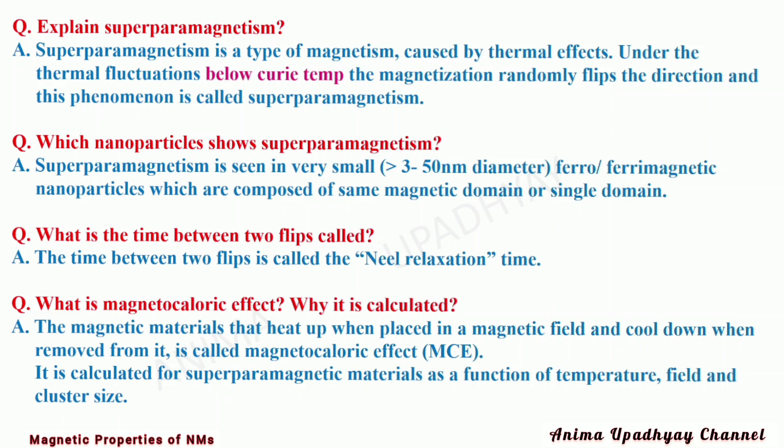What is the time between two flips called? The time between two flips is called the Néel relaxation time. What is the magnetocaloric effect and why is it calculated? Magnetic materials that heat up when placed in a magnetic field and cool down when removed from it exhibit the magnetocaloric effect, abbreviated as MCE. It is calculated for superparamagnetic materials as a function of temperature, field, and cluster size.